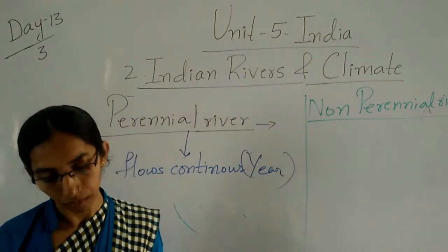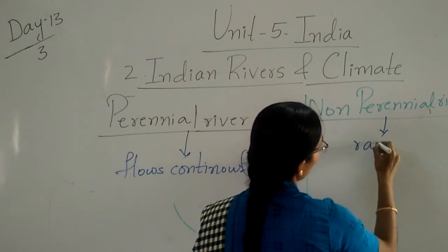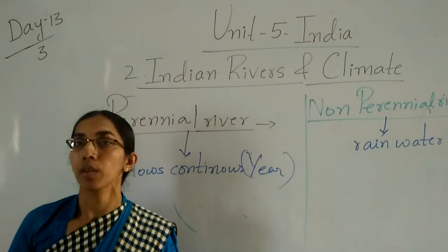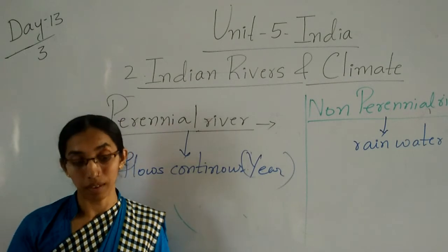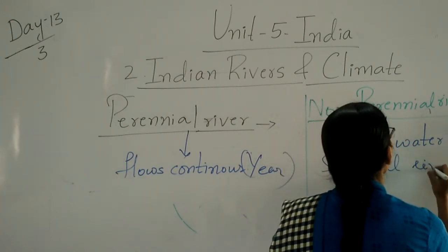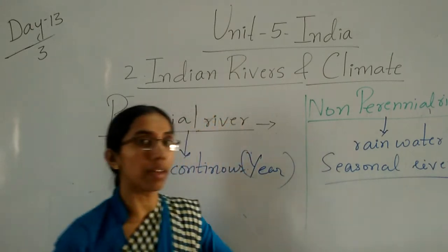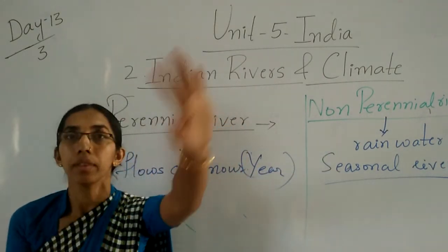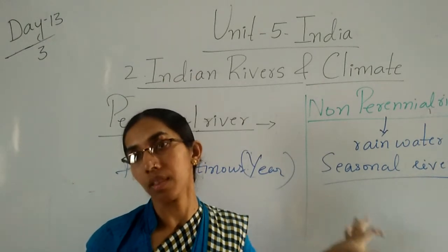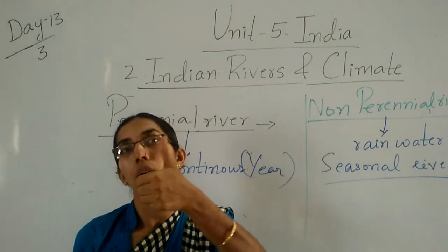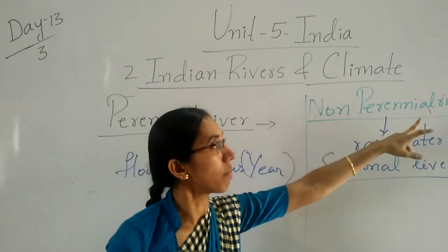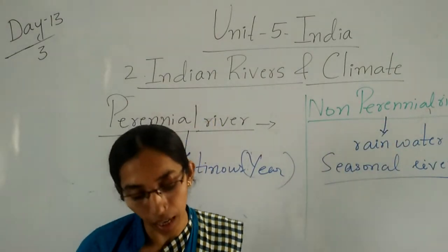Non-perennial rivers depend upon rainwater. They are also called seasonal rivers. Why are they called seasonal rivers? Because when the rain comes, these rivers fill with water. Otherwise, in winter season and summer season, these rivers are dry — there is no water at all.